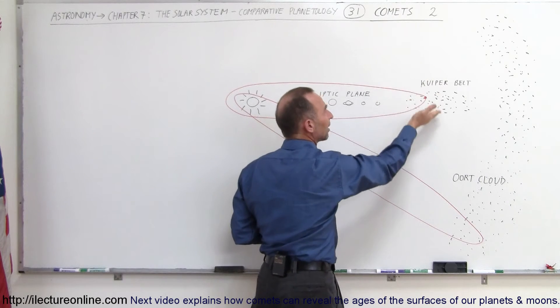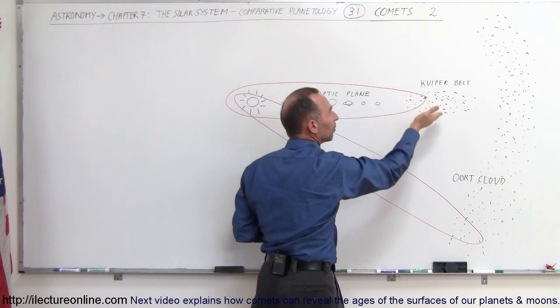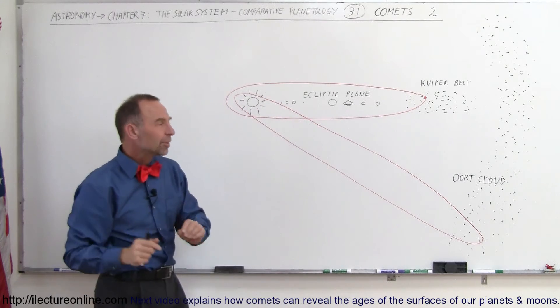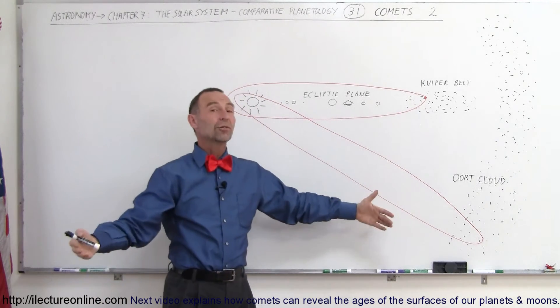Some of these can be maybe 10, 15, 20 degrees above or below the ecliptic plane. But if a comet comes from the Oort cloud, it can come from any direction.